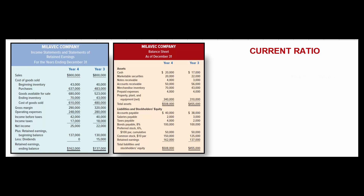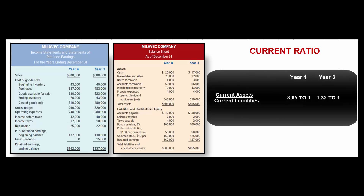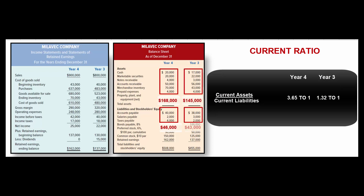We also look at the current ratio: current assets divided by current liabilities. For year four, that's $168,000 divided by $46,000, giving a current ratio of 3.65 to 1. This ratio allows us to compare companies that are much larger or smaller because it's expressed as a ratio rather than an absolute dollar amount.